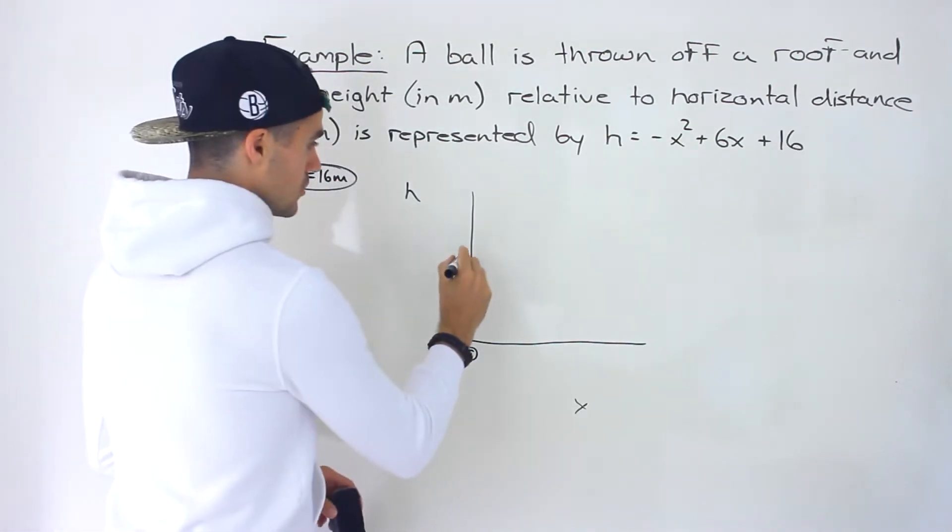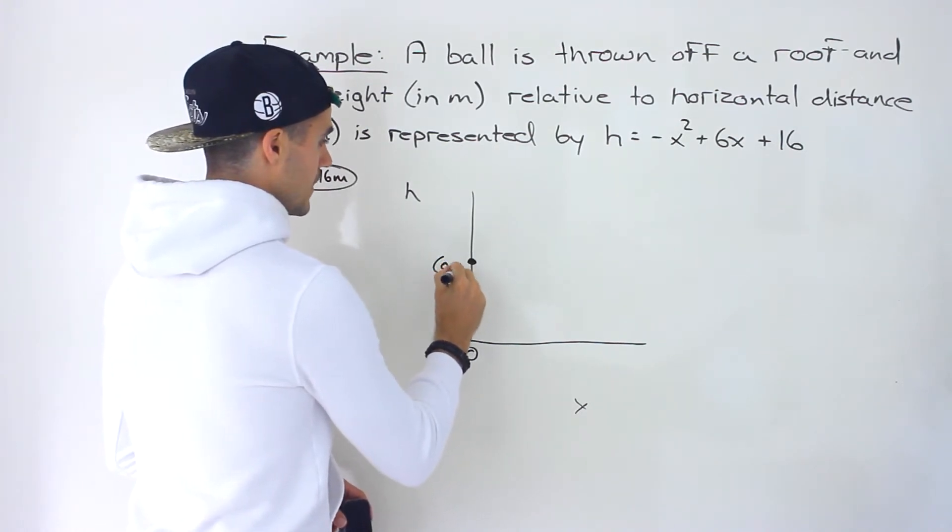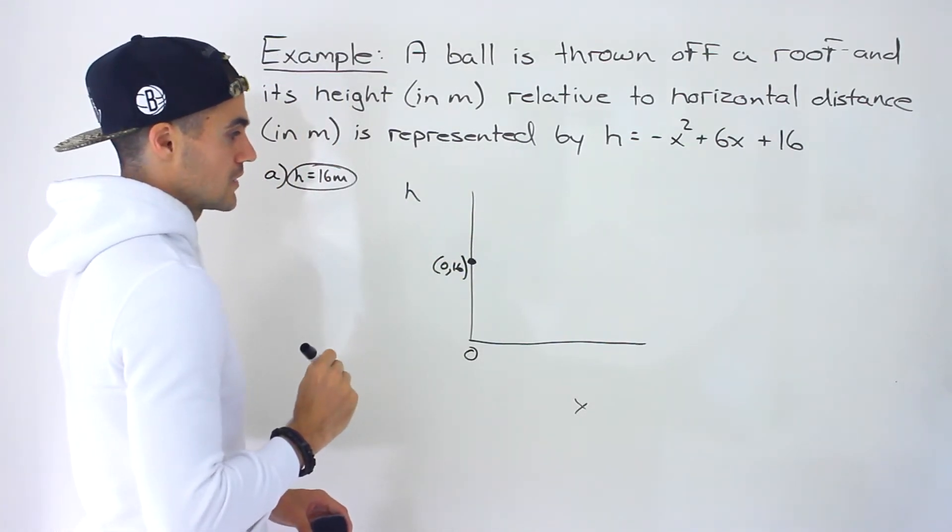So that's the answer to part a. That's the initial height. So we have a coordinate here of an x value of 0 and then we have an h value of 16. Basically the c value in that quadratic right there.